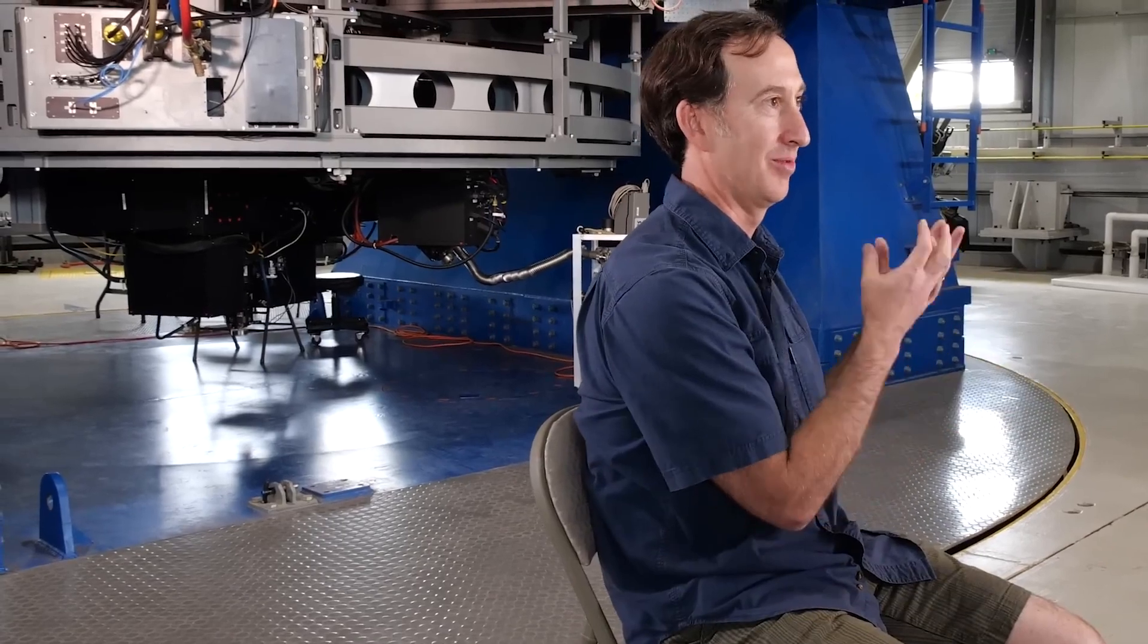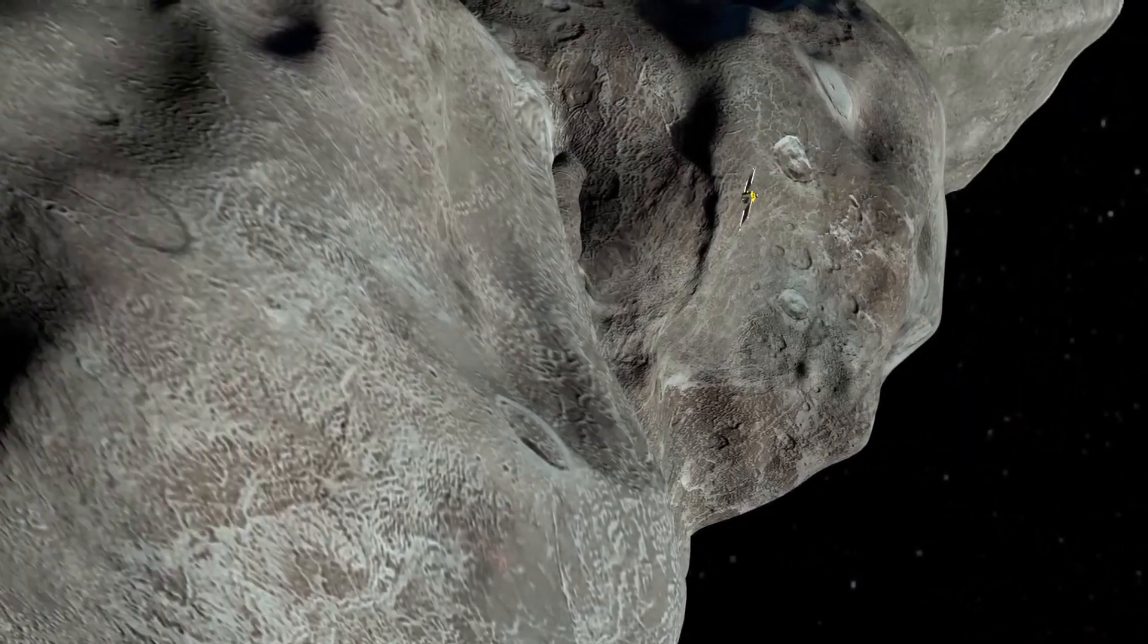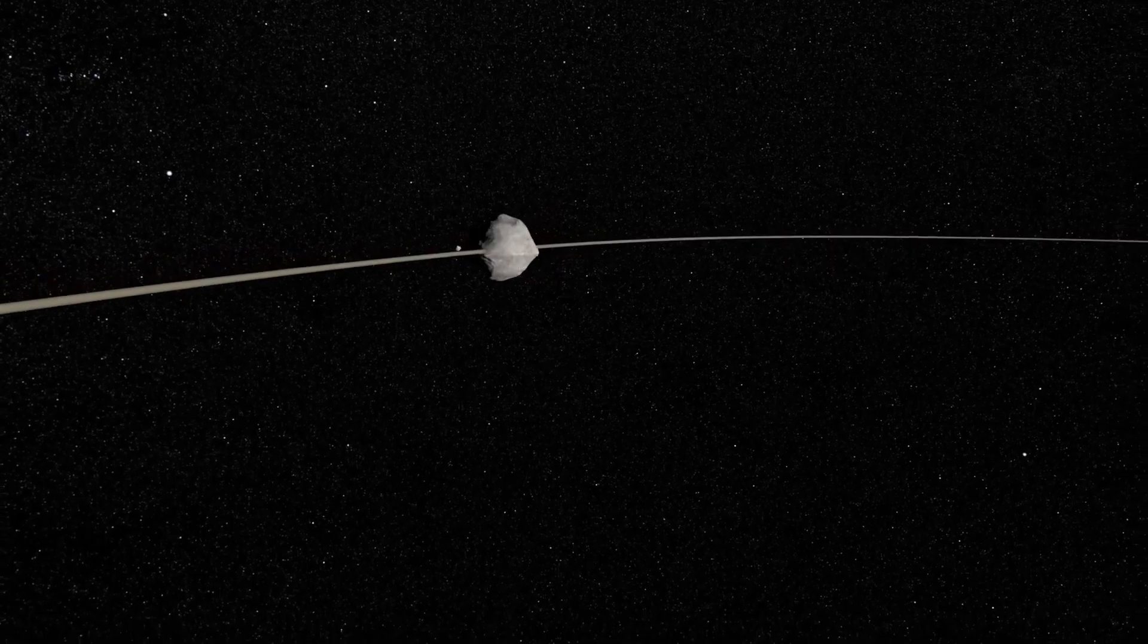DART is really a sort of before and after experiment. We need to understand the system before the spacecraft intentionally impacts, and then we have to understand what the outcome of that impact event is.